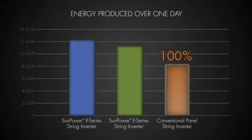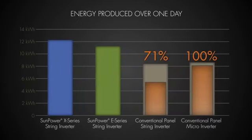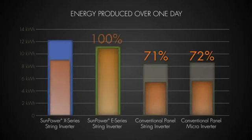Under shaded conditions, the energy production of conventional panels dropped dramatically to 71% of their unshaded capacity. Under these test conditions, micro-inverters made very little difference in avoiding the dramatic reduction due to shading.